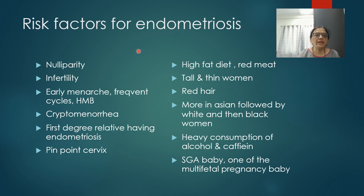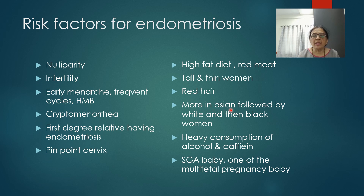Risk factors for endometriosis include: nulliparity, infertility, early menarche, frequent cycles, heavy menstrual bleeding, cryptomenorrhea, first-degree relative with endometriosis, presence of a pinpoint cervix, high-fat diet and high intake of red meat, and thin women. Even red hair is said to be a risk factor. It is more commonly observed in Asians compared to white women and least commonly in black women. Heavy consumption of alcohol and caffeine is a risk factor. Being a small-for-gestational-age baby or one of multiple pregnancies is also a risk factor.